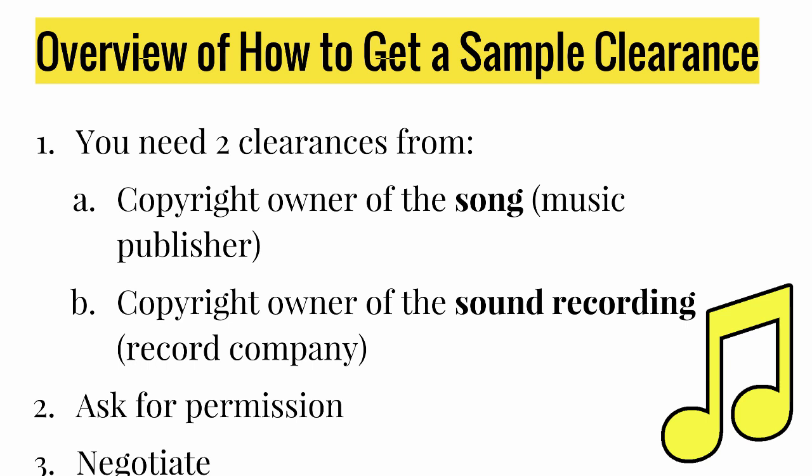To summarize, you need to get two sample clearances: one from the copyright owner of the song, which is usually the music publisher, and one from the copyright owner of the sound recording, which is the record company. In the next lectures, we'll go over each step of how to ask from the publisher, how to ask from the owner of the sound recording, and how to negotiate and ask for clearance for your sample.